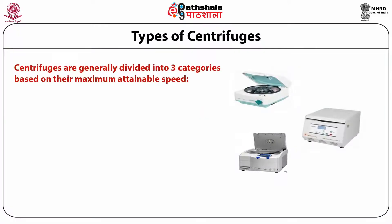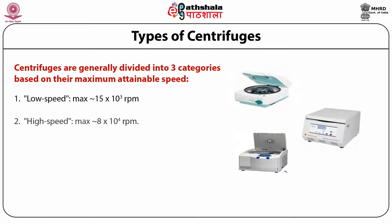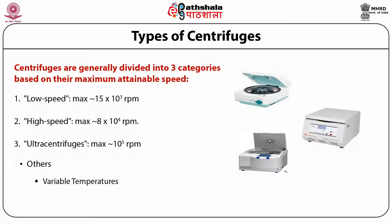Now we will discuss types of centrifuge based on speed, classified into three groups. Low speed centrifugation has a maximum speed limit of 15,000 RPM. High speed centrifuge has a maximum limit of 80,000 RPM. The ultra centrifuge operates at very high speed, more than 1 lakh RPM. Apart from speed, centrifuges come with advanced features like variable temperature control and vacuum capability to control pressure.